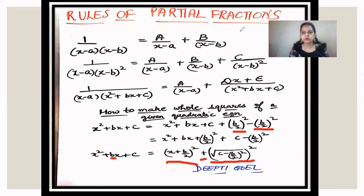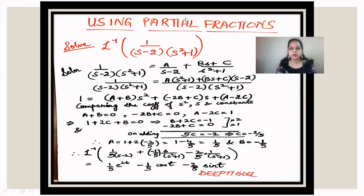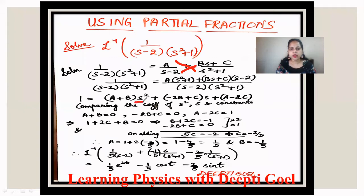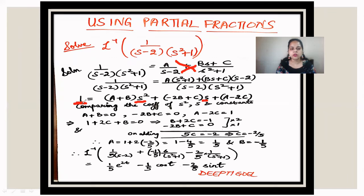Let's apply partial fractions to compute the inverse Laplace of 1 over (s minus 2)(s squared plus 1). We break it as A over (s minus 2) plus (Bs plus C) over (s squared plus 1). Taking the LCM, A is multiplied by (s squared plus 1) and (Bs plus C) is multiplied by (s minus 2). Collecting coefficients: s squared gives A plus B, s gives minus 2B plus C, and the constant gives A minus 2C.